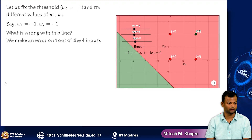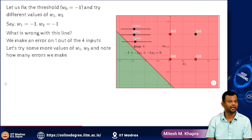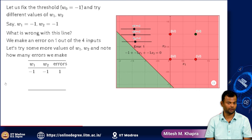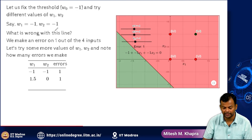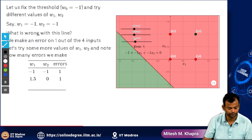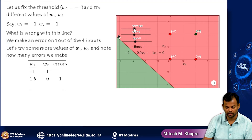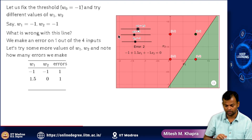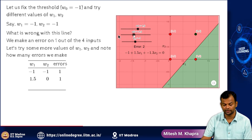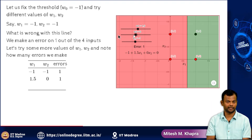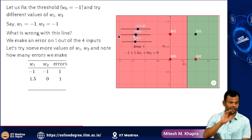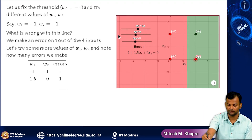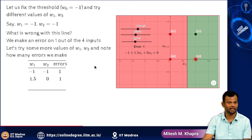So with these particular weights of the perceptron, I am making an error on one of the four inputs. I took w1 = -1, w2 = -1 and made an error on one input. Now let me take the values w1 = 1.5 and w2 = 0. This is the line that I get, and again I am making an error of 1 — but it is a different error this time. One of the points which should have been in the negative half space is actually in the positive half space now.